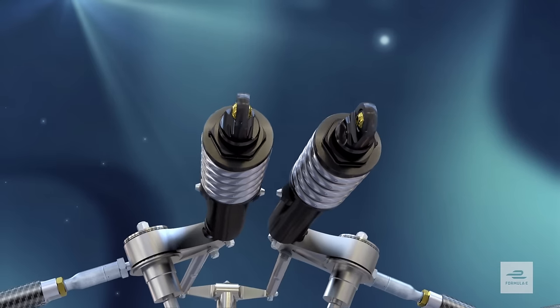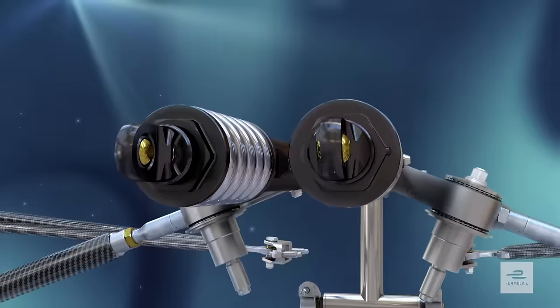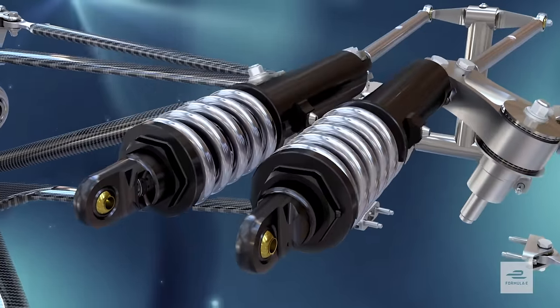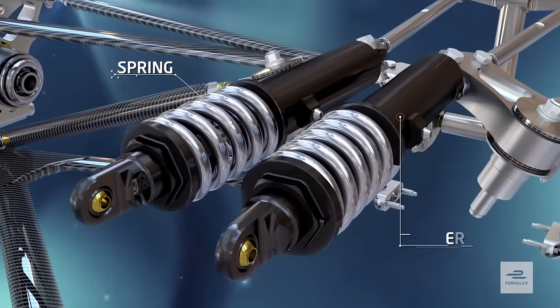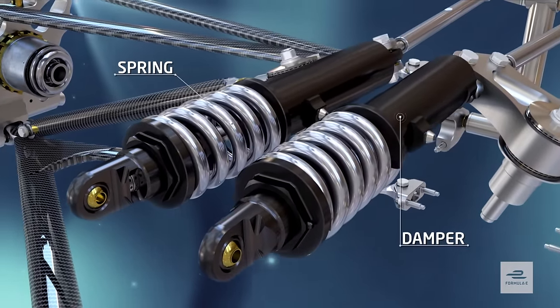Sitting on top of the gearbox are the dampers or shock absorbers with interchangeable springs mounted over the top. They support the weight of the car and control the weight transfer under braking and acceleration.